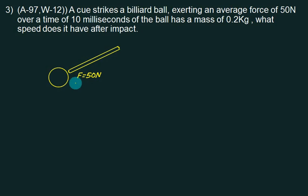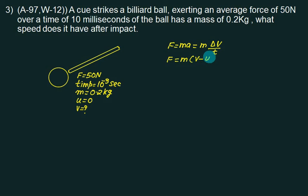Over a time of 10 milliseconds, which means the time of impact is 10 to the power minus 3 seconds. What was the mass of the ball? The mass of the ball is 0.2 kg. If the initial velocity of the ball is 0, stationary, we want to find out the speed it has after impact. So is it a simple problem of impact? What is force? Force equals mass into acceleration. But we can write acceleration equals delta v divided by time.